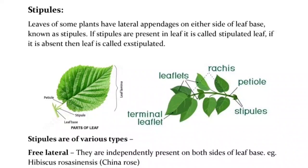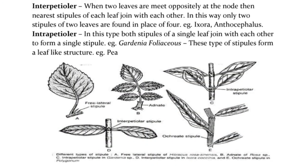Stipules are lateral appendages found on either side of the leaf base in some plants. If stipules are present, the leaf is called stipulate; if absent, it is called exstipulate. Types of stipules: free lateral — independently present on both sides of the leaf base, e.g., Hibiscus rosasinensis (China rose). Interpetiolate — when two leaves meet oppositely at a node, the nearest stipules of each leaf join with each other, so only two stipules are found instead of four, e.g., Ixora and Anthocephalus. Intrapetiolar — both stipules of a single leaf join with each other to form a single stipule, e.g., Gardenia.